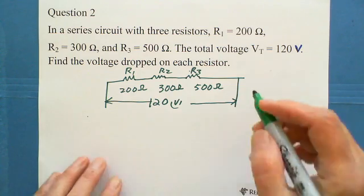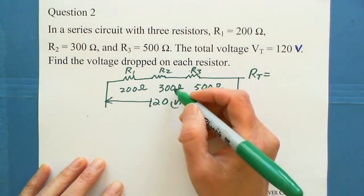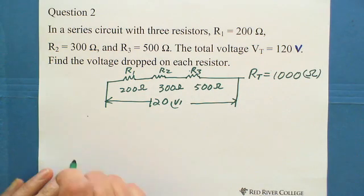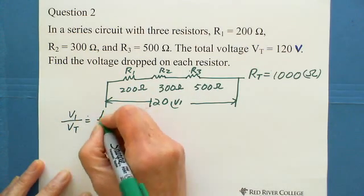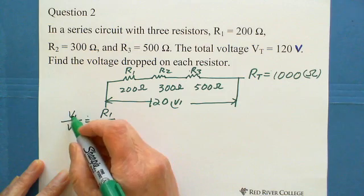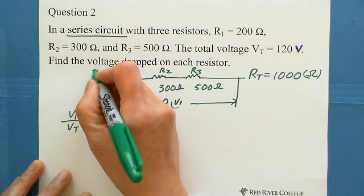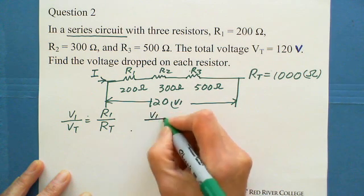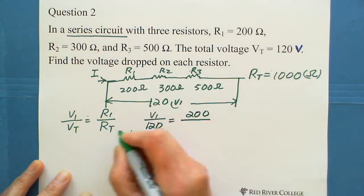Same idea. First we find the total resistance in series by adding them together: 200 plus 300 plus 500 equals 1,000 ohms. Then for V1 we write V1 over V total equals R1 over R total. Because this is ratio proportion — more resistor, more voltage drop in series — all coming from the fact that current is the same.